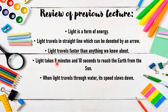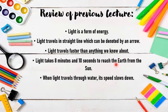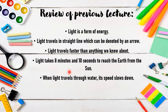Light takes 8 minutes and 10 seconds to reach the earth from the sun. When light travels through water, its speed slows down. So even though light is the fastest thing in the world, when it passes through water, its speed slows down.